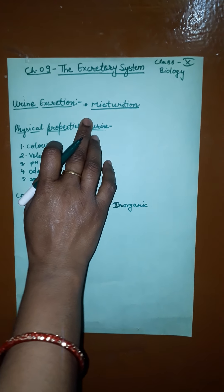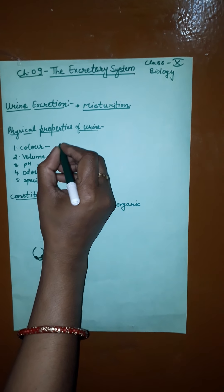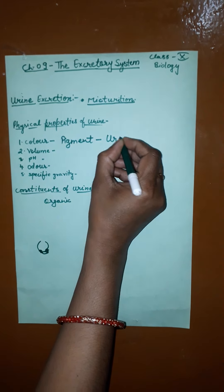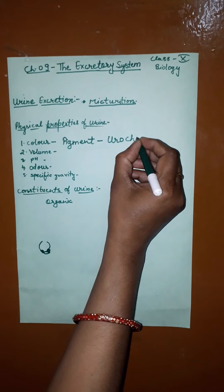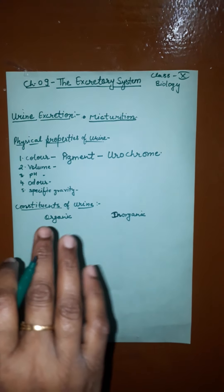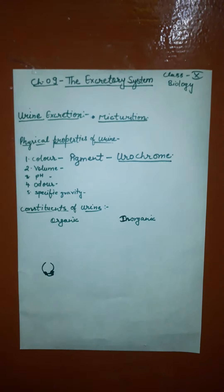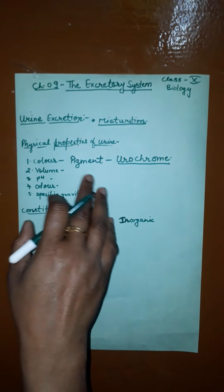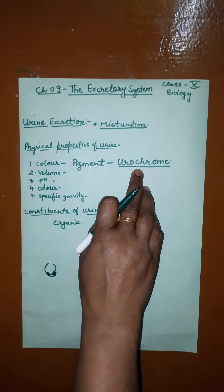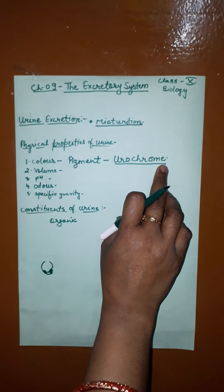Now, the physical properties of urine. As you know, it is a clear yellow substance. It is yellow in color due to the presence of the pigment urochrome. Note that biliverdin and bilirubin are bile pigments, but urochrome is the pigment present in the urine. This is also a one-mark board examination question — which pigment is present in human urine? The answer is urochrome.